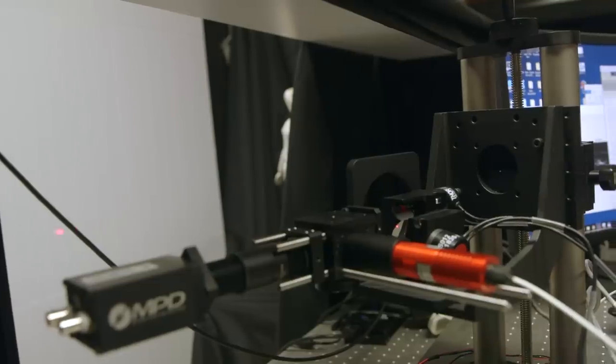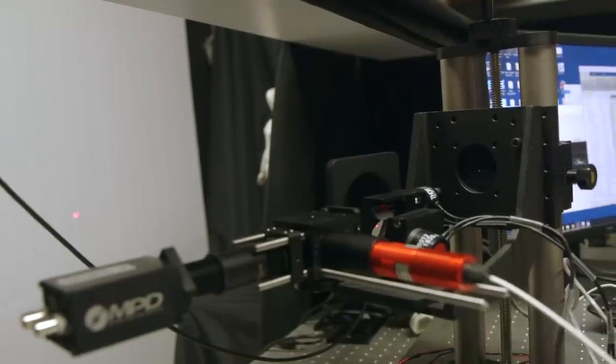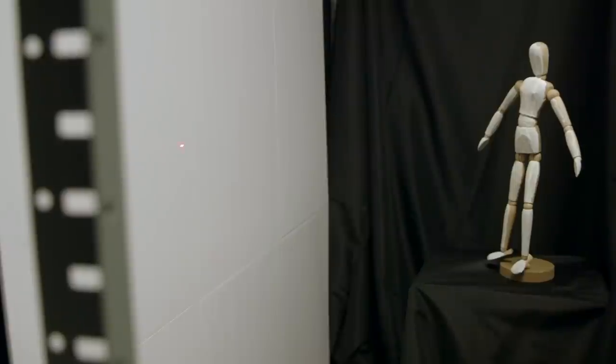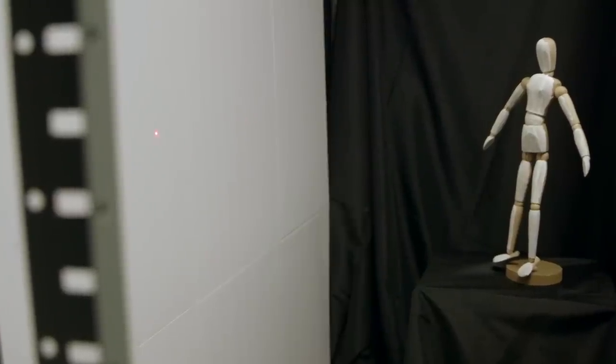Stanford University. The idea is that we want to image objects where we don't have direct line of sight. That is, we want to capture an image of an object where there's an occluder, something blocking the direct view of that object.